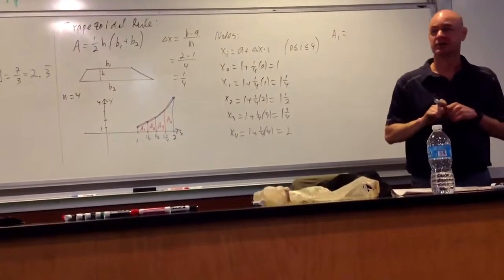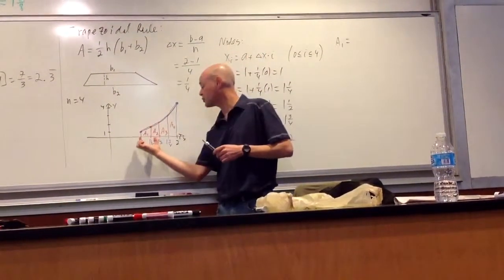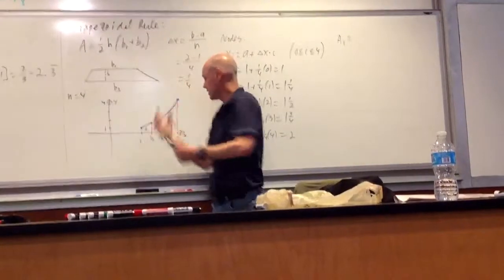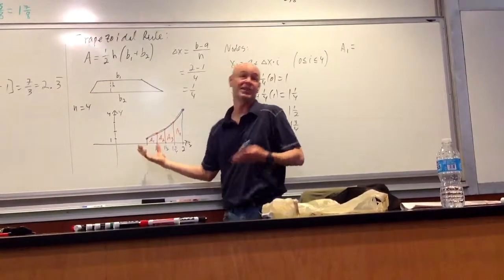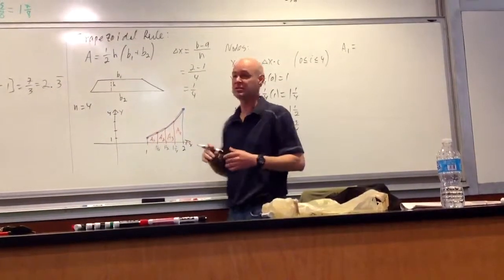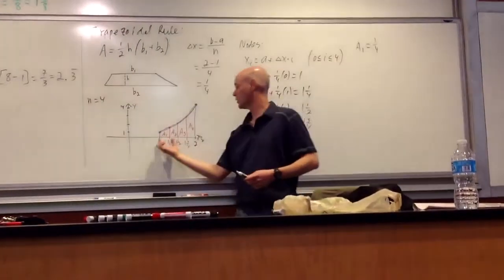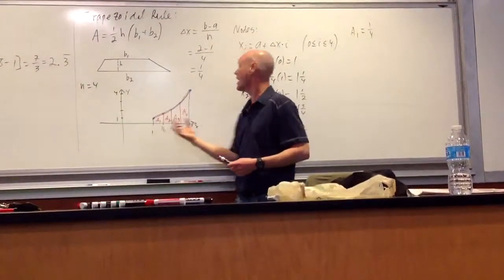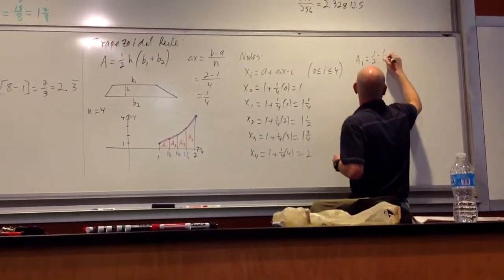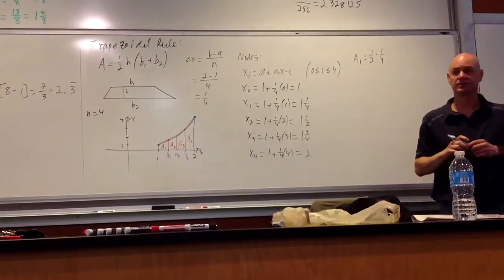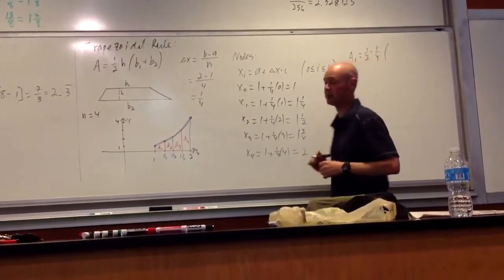It's 1, it's a trapezoid. The height of this trapezoid is actually, if we turn this on its side, is actually this distance here. Parallel, parallel, height. Which is delta x in this case, right? Which happens to be one fourth. So it's one half, one half times delta x times the sum of the two bases.